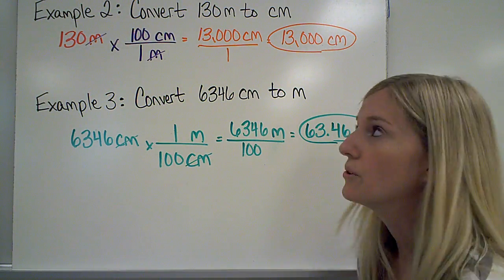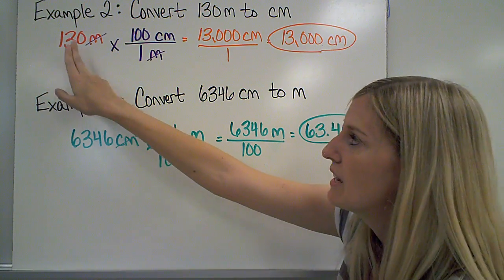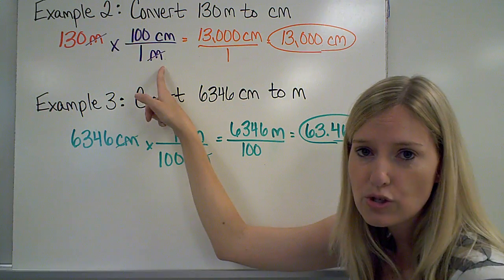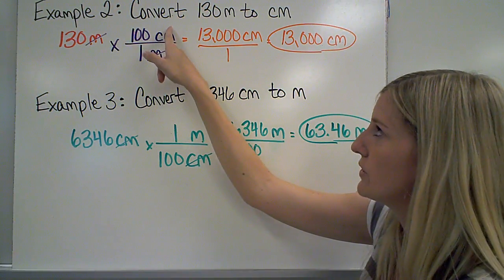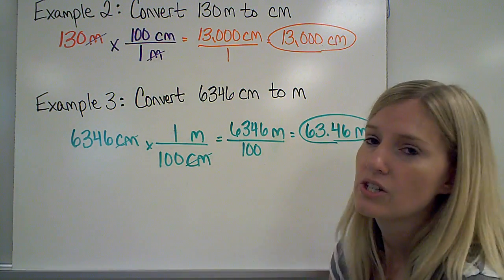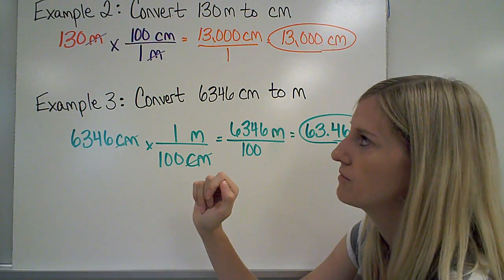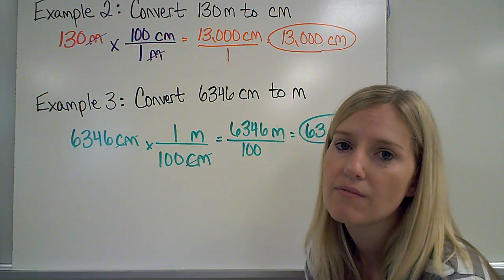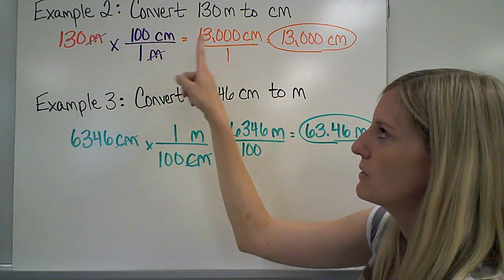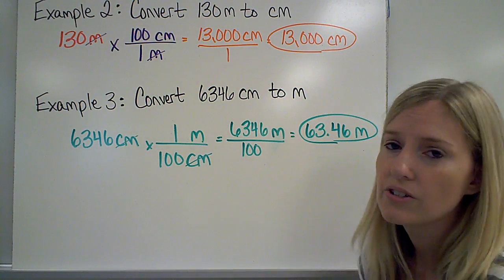Example 2: convert 130 meters to centimeters. I rewrote my original measurement and multiplied it by a conversion factor. I made sure the unit on the bottom was meters so they would cancel. The unit on the top is centimeters because that's the unit I'm trying to get to. A meter is larger than a centimeter, so in one meter there are 100 centimeters. I cancel the units and I'm left in centimeters. I multiply the top and divide by the bottom to get 13,000 centimeters.